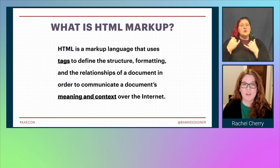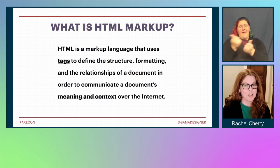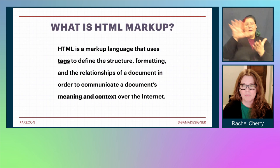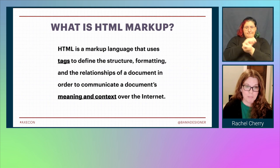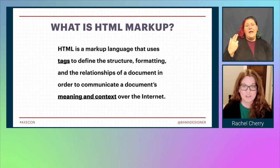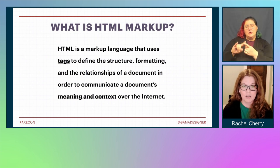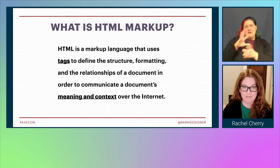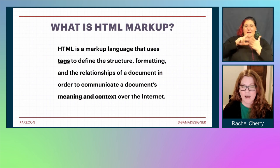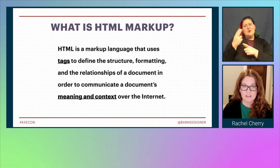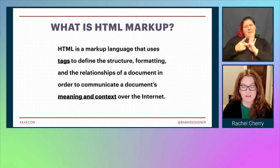Now let's mesh together what we've learned about markup languages with our definition of HTML. HTML is a markup language that uses tags to define the structure, formatting, and the relationships of a document in order to communicate a document's meaning and context over the internet. These tags give meaning — or semantics — to our content in order to publish our content and make that content accessible over the internet.